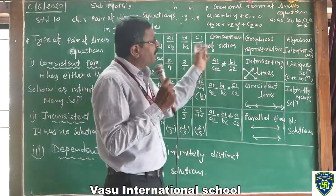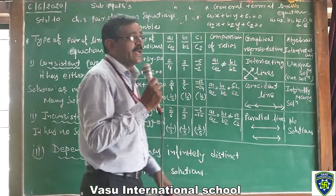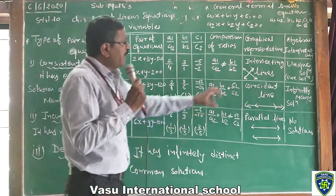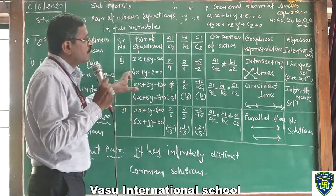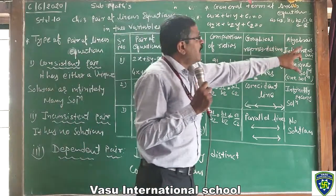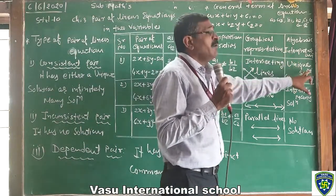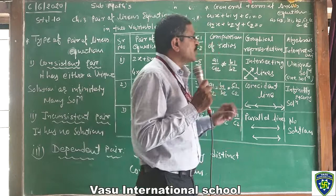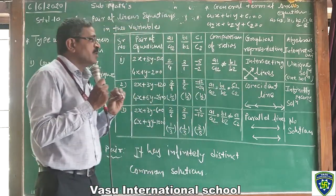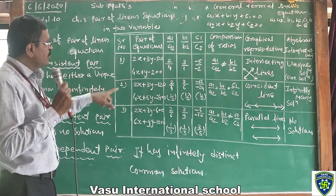The graphical representation shows intersecting lines — both lines are intersecting. The algebraic interpretation is that they have a unique solution, meaning one and only one solution.